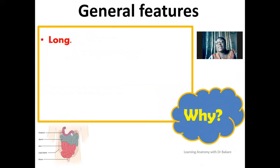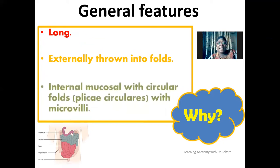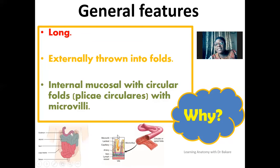Looking at the general configuration of the small intestine, it is a very long tube that folds over itself. In surface presentation, it is thrown into folds, and the internal mucosa are also thrown into folds — both outside and on the inside. The reason for this configuration is to increase the surface area of the small intestine, enhancing complete digestion of food particles and absorption of minerals and nutrients. A surface with infoldings always has more surface area than a plain surface, which is why this helps increase the effective surface area.